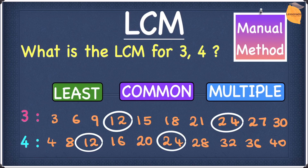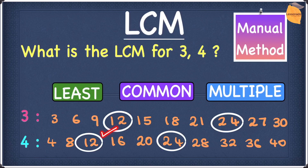Our final step is to find the least one. So between twelve and twenty-four, which is the smallest? As we all know, twelve is the smaller one. This means the lowest common multiple — our answer — is twelve. So the answer to this question is twelve. I hope you guys understood everything so far.